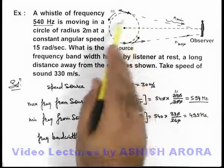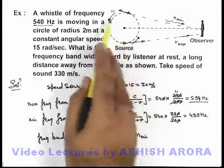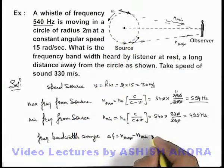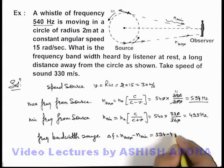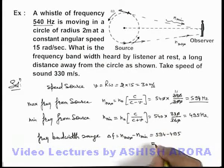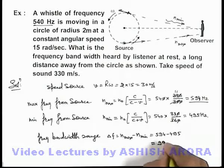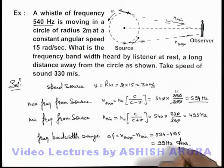All these frequencies will be received by the observer corresponding to various locations of the source. So this will be 594 - 495 = 99 Hz. This bandwidth range will be 99 Hz, and that's the answer to this problem.